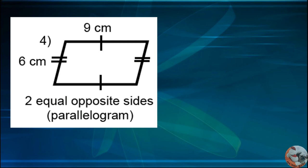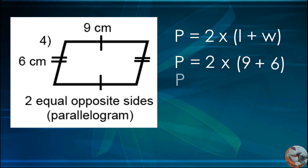Given a parallelogram with two equal opposite sides. P equals 2 times quantity L plus W. P equals 2 times L, which is the length, 9 cm, plus the width, which is 6 cm. P equals 2 times 15. The perimeter of this parallelogram is equal to 30 cm.